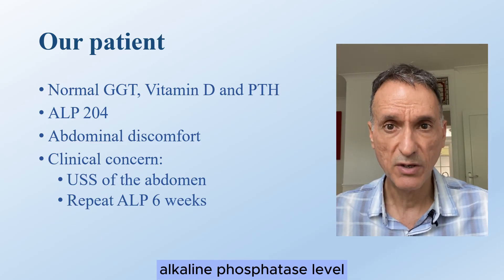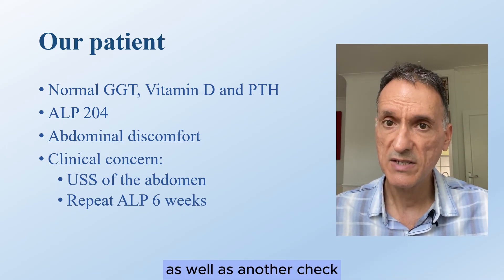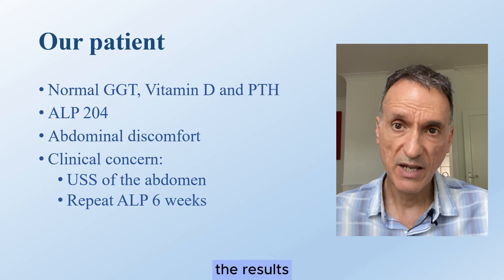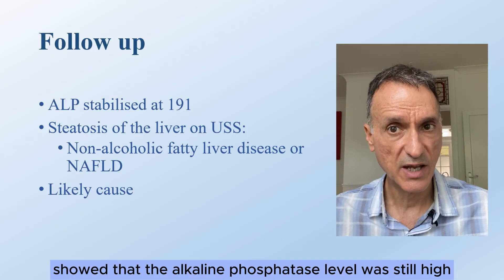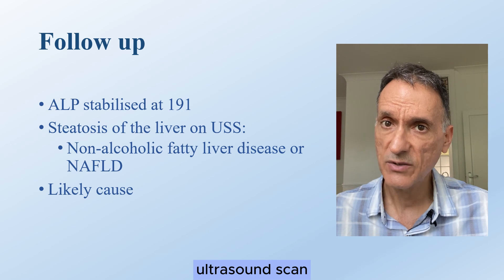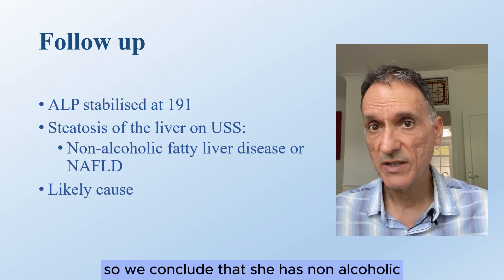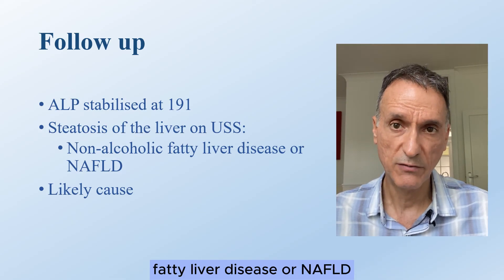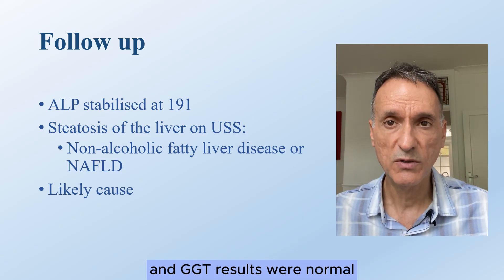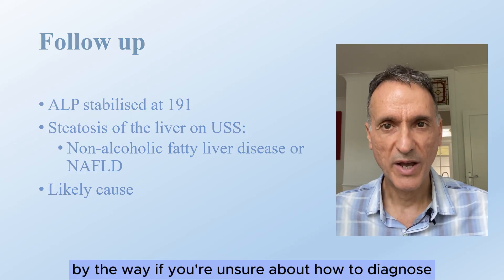Because of the further rise in alkaline phosphatase and her symptoms, an ultrasound of the abdomen was arranged as a precaution, along with another check of the alkaline phosphatase six weeks later. The results showed the alkaline phosphatase had decreased slightly to 191, and the ultrasound scan showed steatosis of the liver. We conclude she has non-alcoholic fatty liver disease, or NAFLD, likely explaining the raised alkaline phosphatase despite normal LFTs and gamma GT.